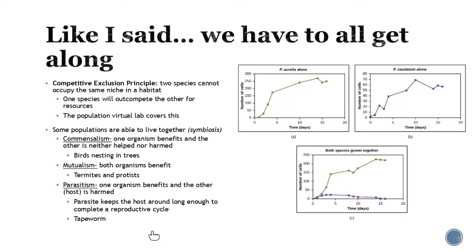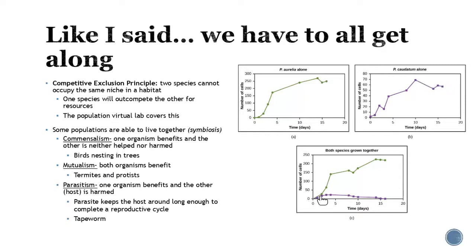We have to all get along, but the competitive exclusion principle states that two species cannot occupy the same niche and habitat. This connects to the population lab you'll go through. Here we have two paramecium species growing together. When they grow on their own, the population increases and eventually decreases over time, and both can survive alone. But when you put them together, one species will outwit and outlast the other — P. aurelia out-competes P. caudatum. The lab uses images you click through, which are put on slides.